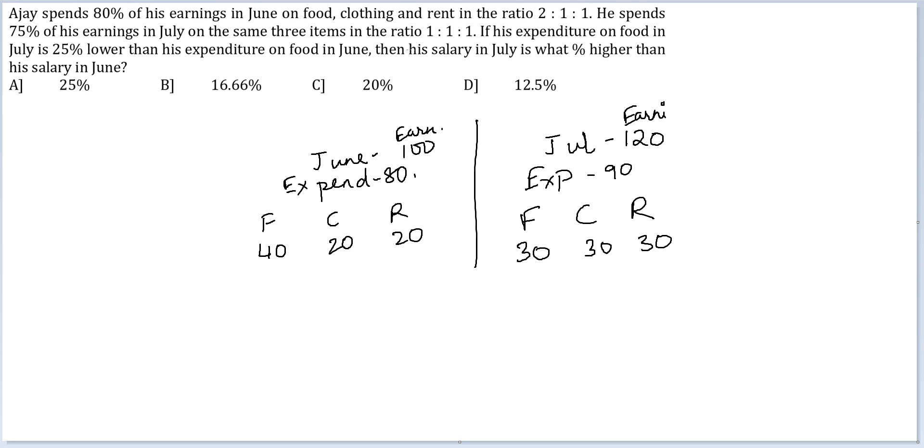Okay. Final question is, then his salary in July is what percentage higher than his salary in June? Previously, it was 100. Now it is 120. Therefore, the answer will be option C, 20%. We'll see you in the next one. Thank you.